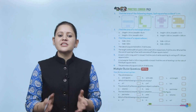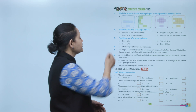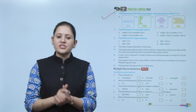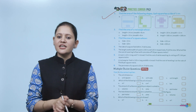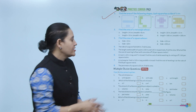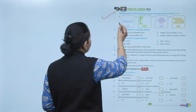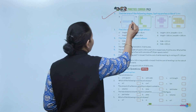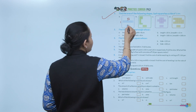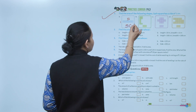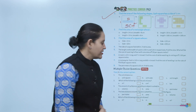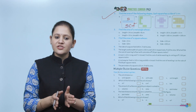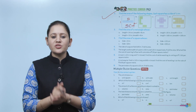Practice corner 14.3: find the area of the following shapes where each square has a side of one centimeter. Counting: 1, 2, 3, 4, 5 — so 1 into 5 equals 5 centimeter square. You have to practice all the questions of this exercise.